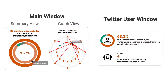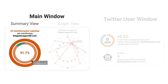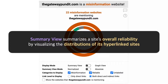Misfits has two windows: main window and Twitter user window. I'd like to introduce what the main window works like. There are two views in the main window, and the first view is the summary view, which summarizes the distributions of hyperlinked sites of a target website. Here, gatewaypundit.com is set as the target website to be visualized.